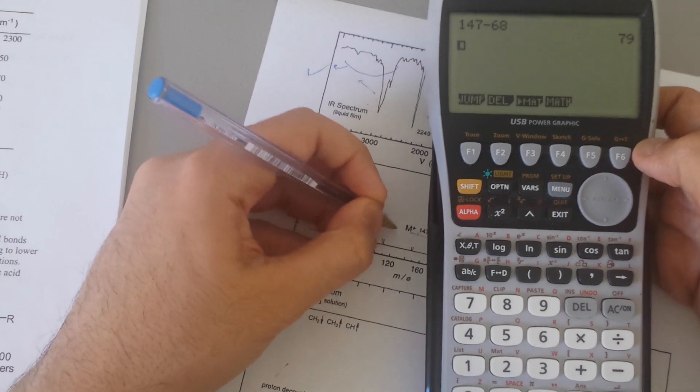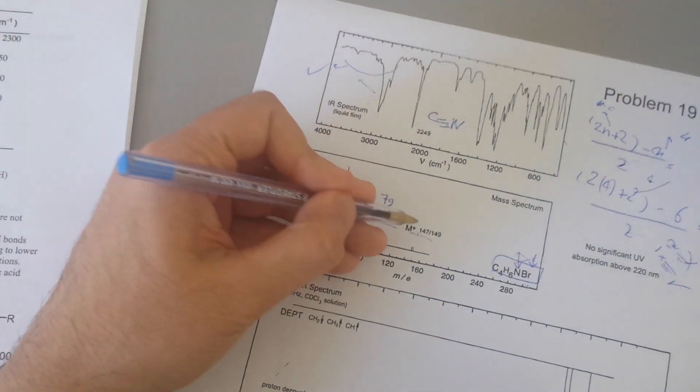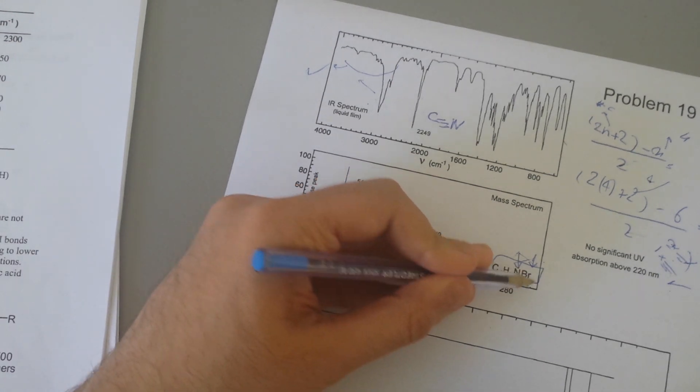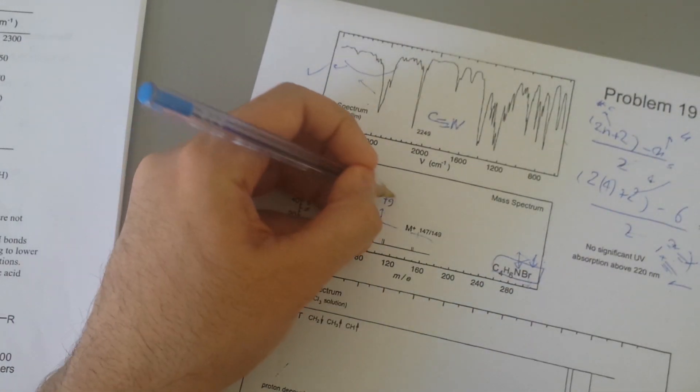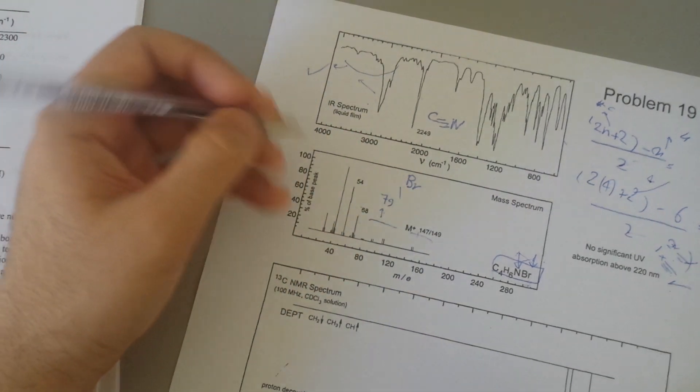79 base peak here. And what is 79? Do we know 79? We have one bromine mass is 79. So this means there's just single bromine. So this fragment is single bromine, which is interesting.